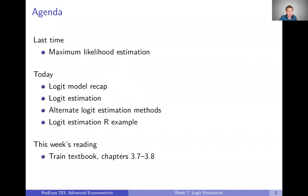Then we're going to talk about how to estimate the logit model using maximum likelihood. And then finally, we're going to talk about a few kind of alternate estimation methods or estimation frameworks that we could use to estimate a logit model. We're not going to go into details on those today, but just want to point them out to you. And this week, all the material coincides with chapters 3.7 and 3.8 in the train textbook. So make sure to take a look at those before you keep going with these videos.